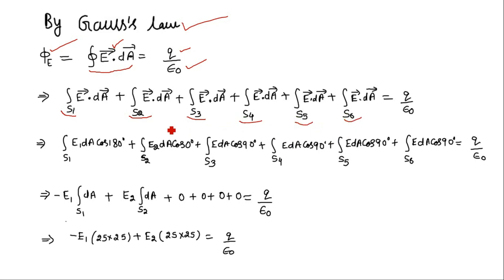As described previously, the value of angle between electric field and area vector for S1 is 0 degrees. For S2 it is 180 degrees, while for all other four surfaces this value of the angle between electric field and area vector is actually 90 degrees.